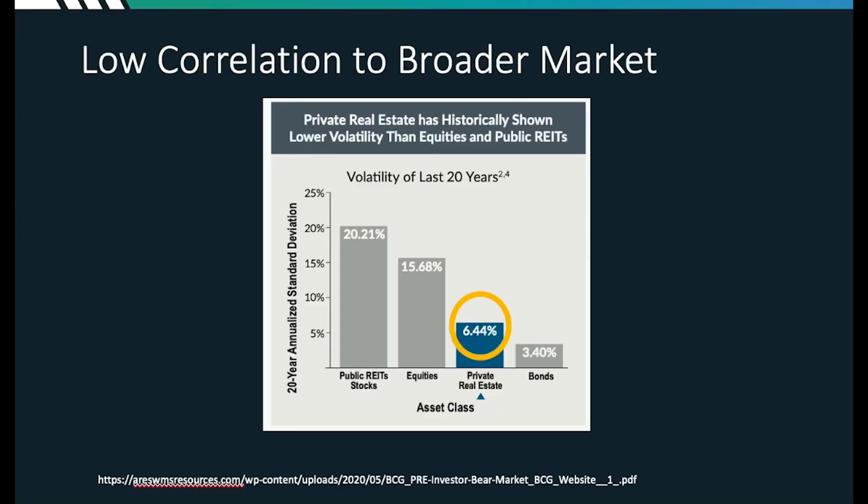With that in mind, let's look at the actual data points between private real estate and publicly traded REITs, as well as equities and bonds. Starting with volatility, the chart you see here on the screen shows the overall volatility of REITs, equities, private real estate, and bonds. You can see that private real estate has a fairly low volatility compared to REITs and equities — 6.4% compared to 20.2% for REITs.